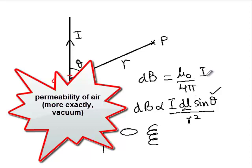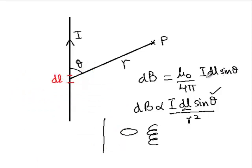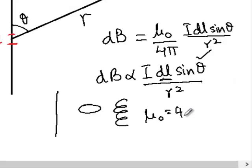Mu not is the permeability of air or vacuum. So you have mu not by 4 pi I dl sin theta over r squared, and the value of mu not is 4 pi into 10 to the power minus 7 henry per meter.